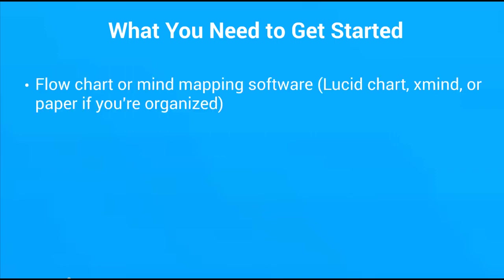Now let's talk about what you need to get started. You're not going to need a lot of tools for this practice, but you're going to need a way to map things out — whether it be a flowchart system or mind mapping software. We recommend Lucid Chart, which is what we're going to be using. However, if you want to use a mind mapping software like XMind or even paper if you're organized, that's fine. We highly recommend Lucid Chart because it's really easy to map things out, and you'll see what I mean when I jump right in.